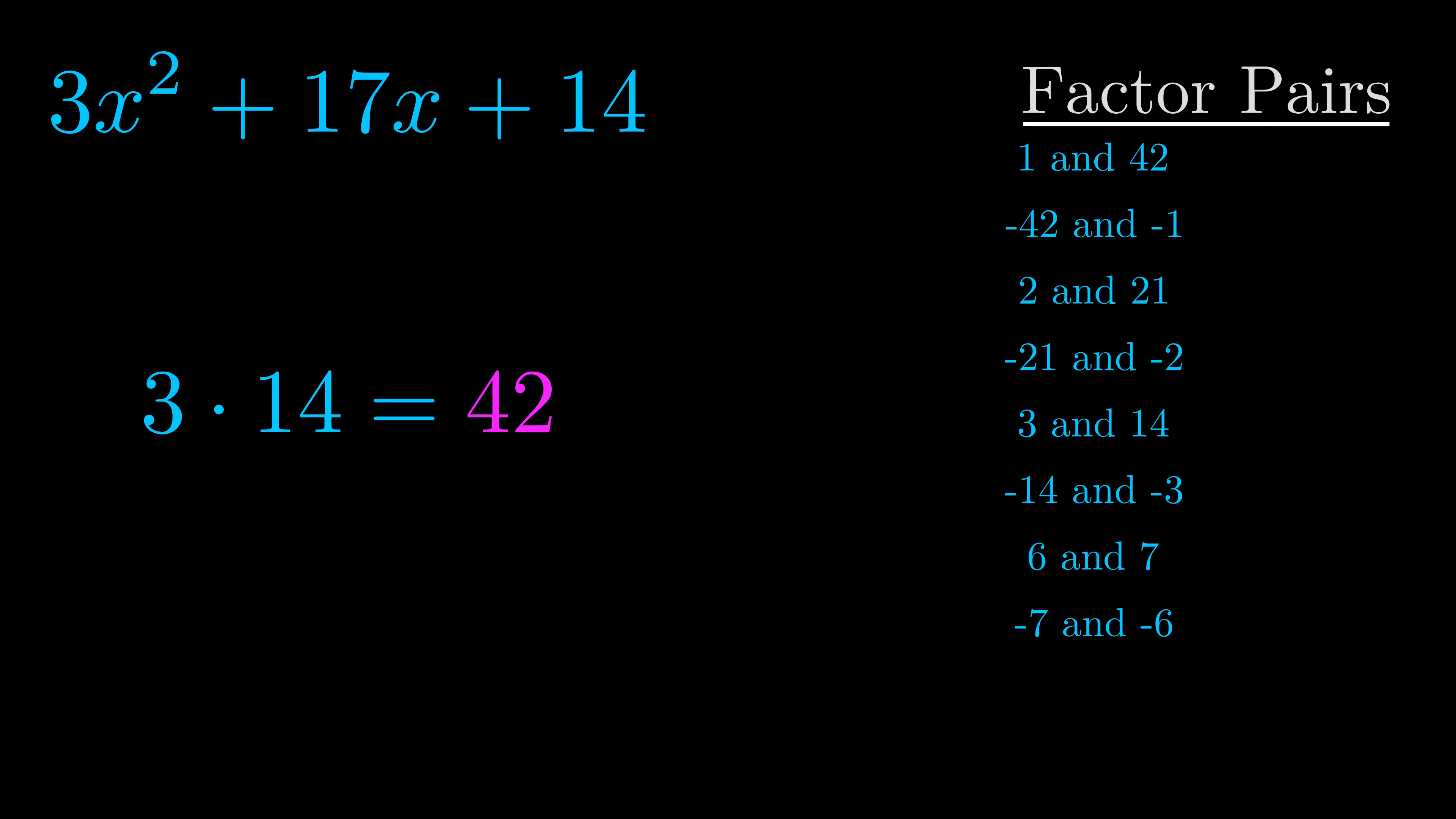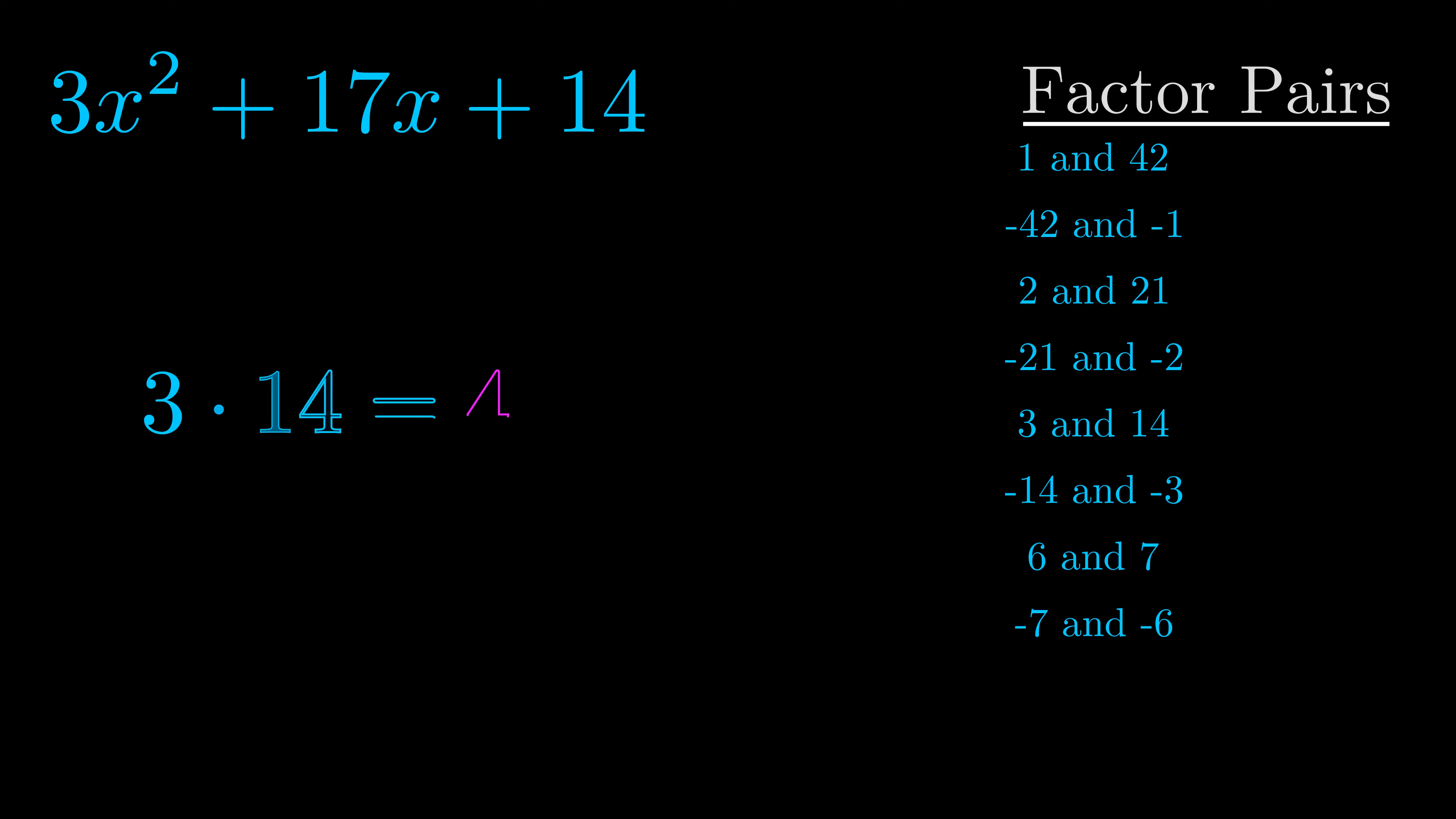Once you have these factor pairs, the goal is to find which of these pairs adds to the b value. The b value is the coefficient on the x term. That's the middle term, the one that we haven't done anything with yet. And really this is the only factor pair that we need.